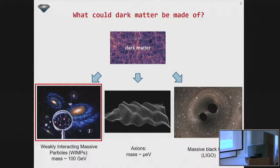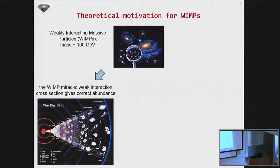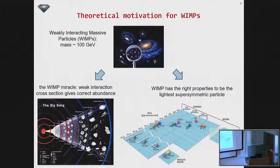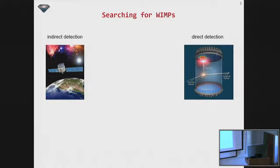So first, I'm going to have a couple of slides on WIMPs. Basically, very quickly, the WIMPs have been a very well-motivated candidate for a number of decades. And there's the WIMP miracle, which kind of gives roughly the correct abundance at present time. It also has the right properties to be the lightest super symmetric particle. However, a number of direct and indirect searches in the last few decades have basically turned up nothing.